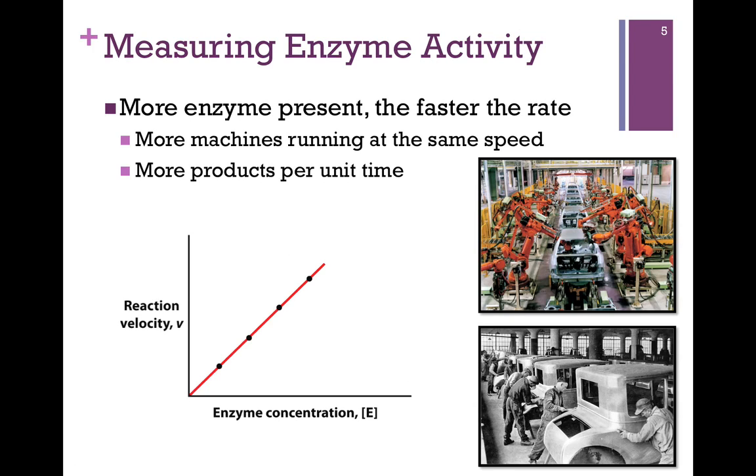Now let's look at how that reaction velocity, that is how much product per unit time, will be formed depending on enzyme concentration. And again, it's a linear relationship. So if we have one enzyme working, we get a certain amount of product within a given period of time. If we have two enzymes working, then we'll get twice the product. Three enzymes, we get three times the product in the same amount of time. In other words, the more machines you have running, and they're all running at the same speed, the more product you will get within that period of time.